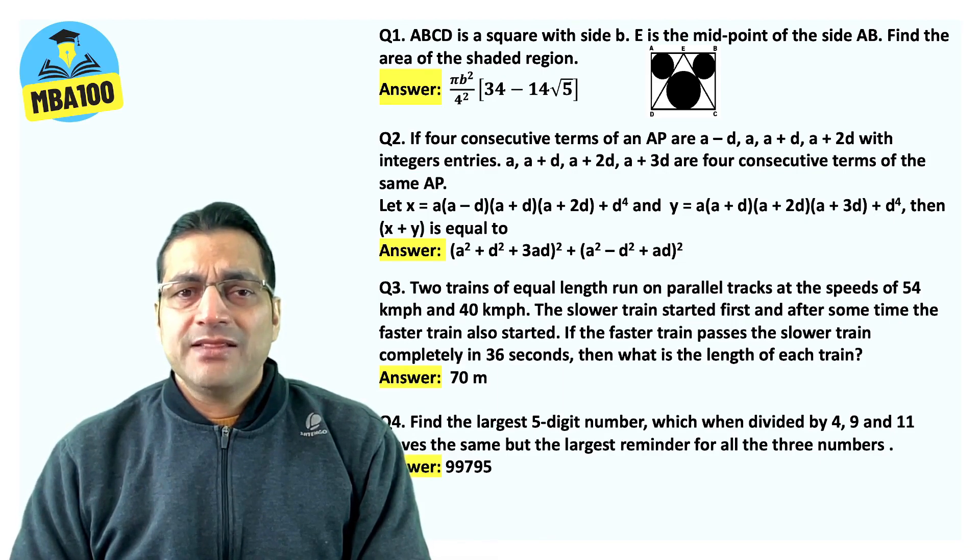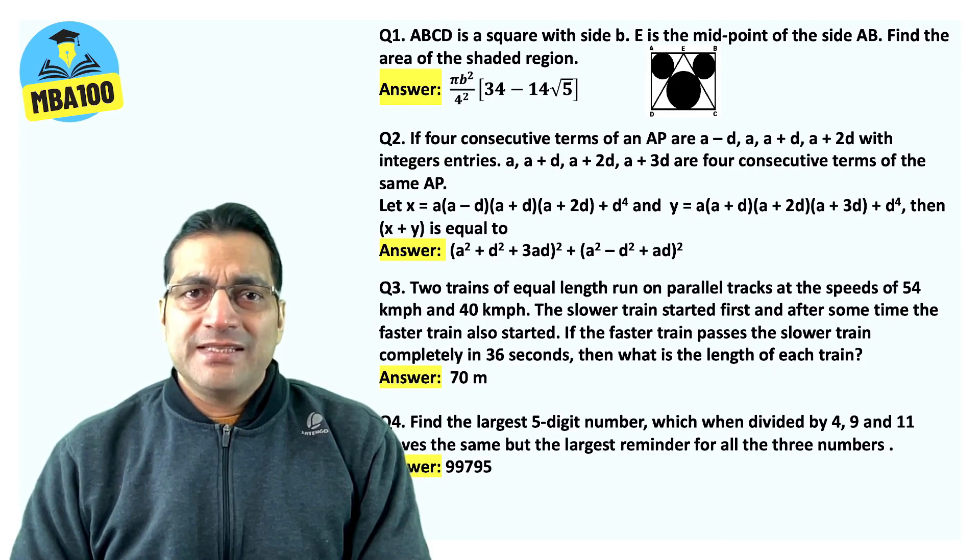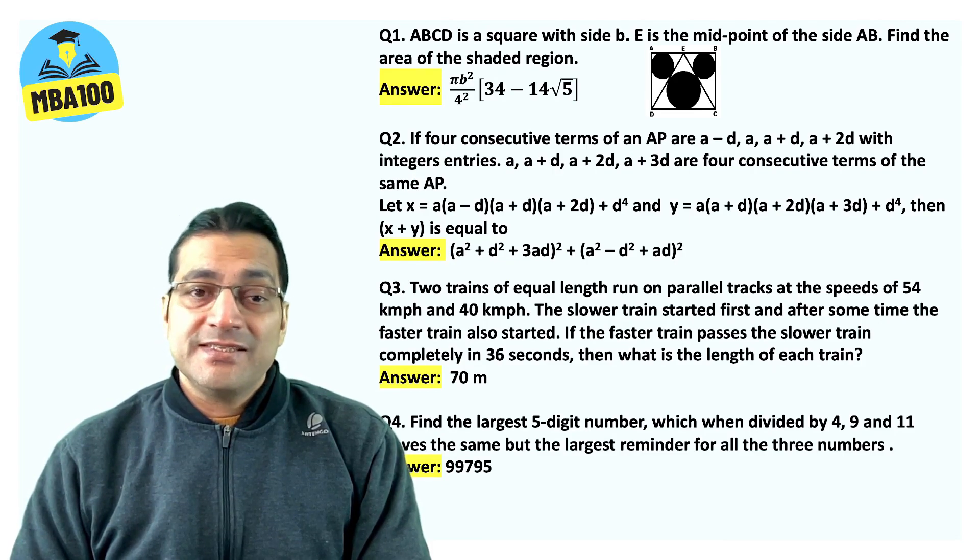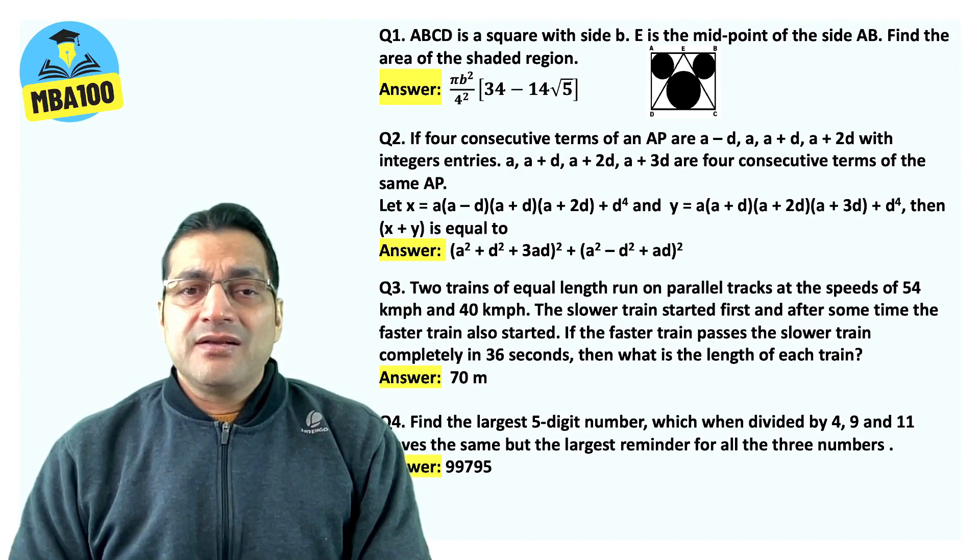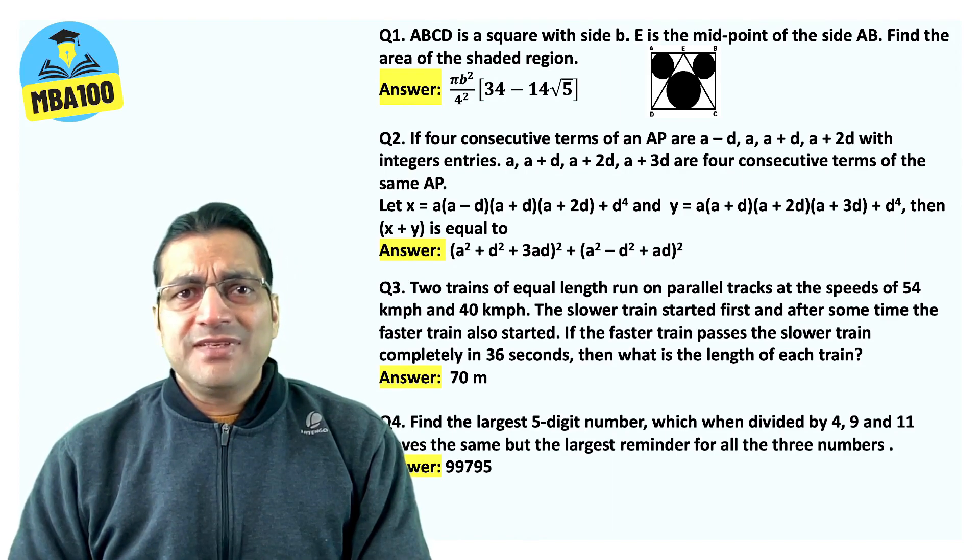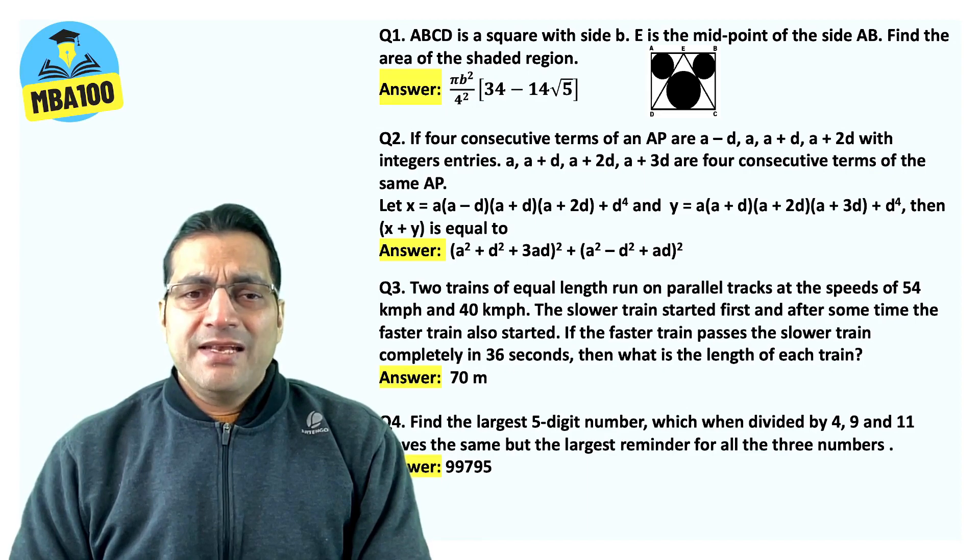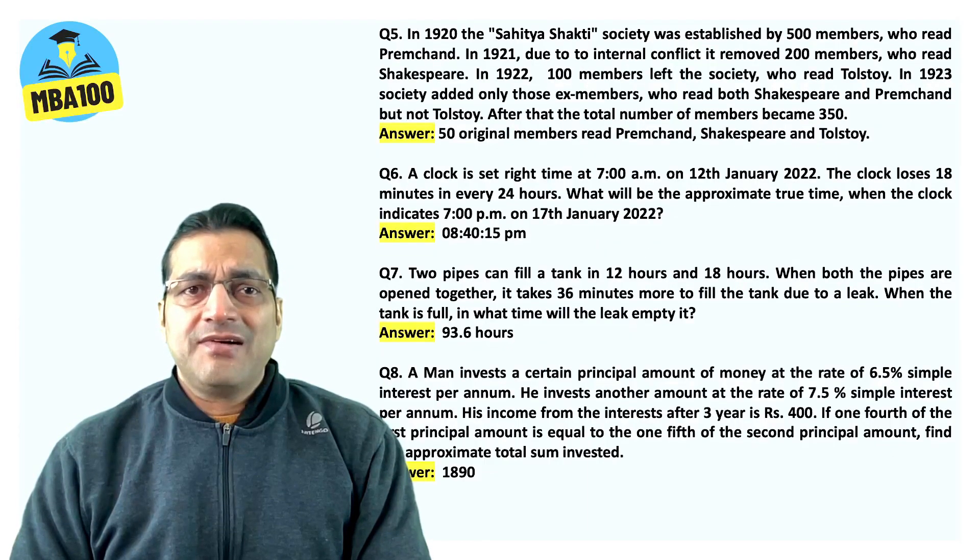Two trains of equal length. The length of each of the trains is 70 meter. And the largest five digit number with this quality is 99795.